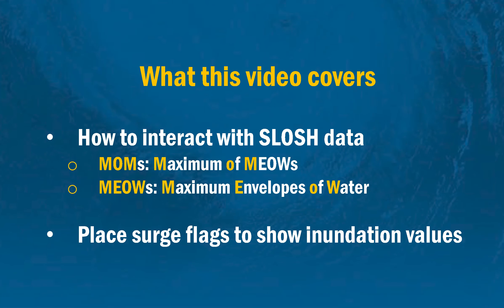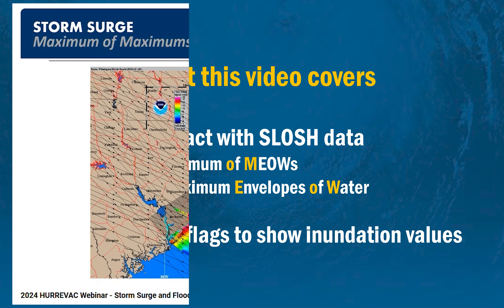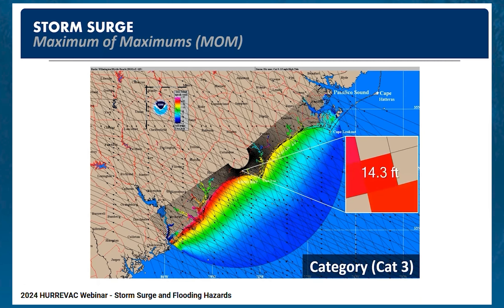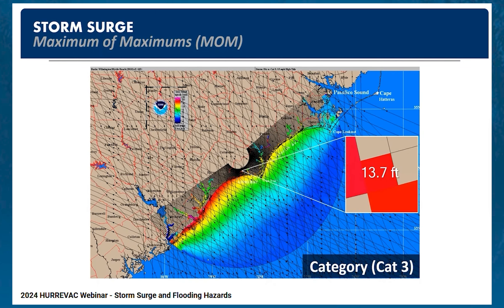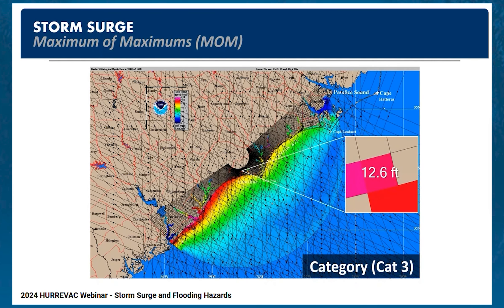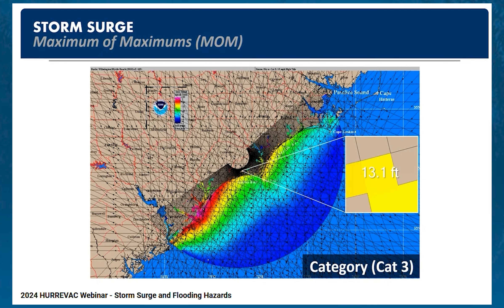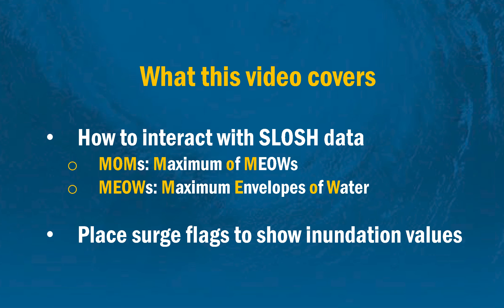There are two types of Slosh products in Hurrvac: MOMS and MEOWS. To fully explore those acronyms and what they mean, I encourage you to check out the Hurrvac User Guide, as well as Day 4 of our annual webinar series. The first 30 minutes contains an expert breakdown of how those products are made by the National Hurricane Center Storm Surge Unit and what they mean. In this video, we'll show you how to access and interact with that information inside the program.